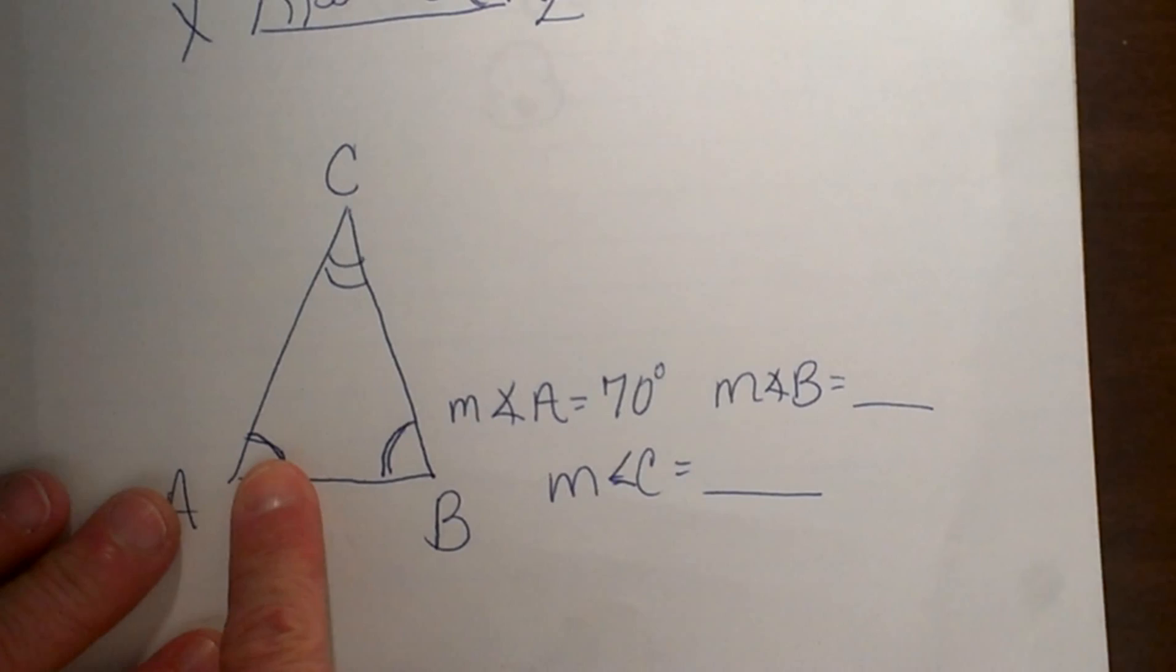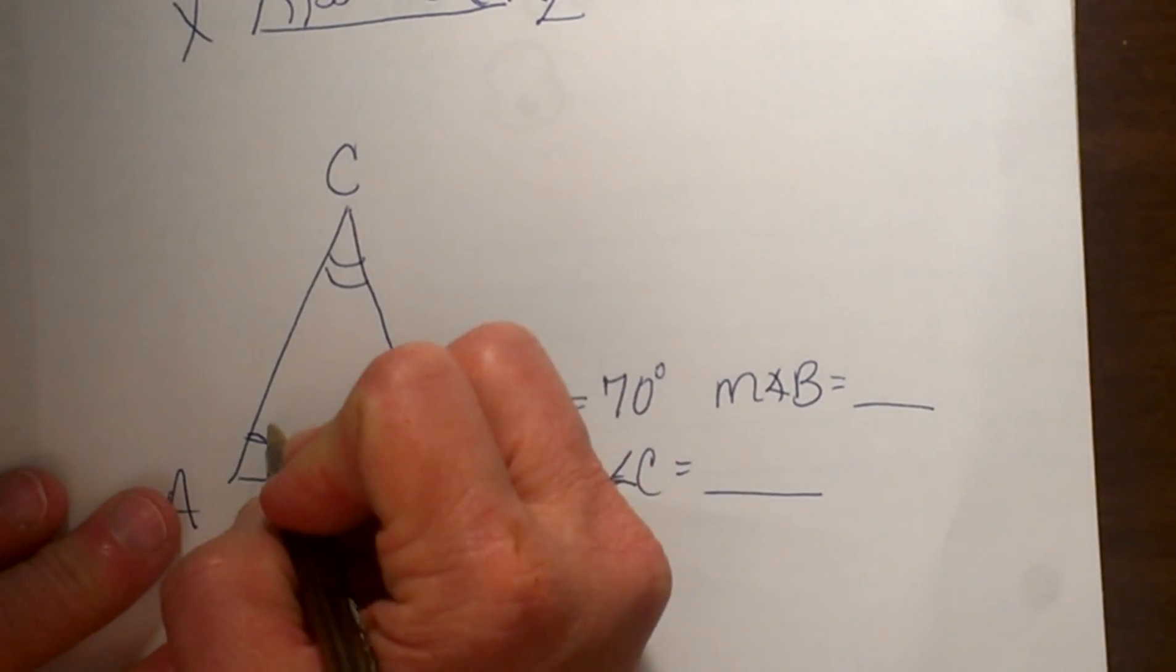What if we are given one of the base angles? This time we are given the base angle is 70.